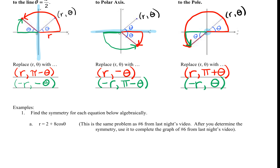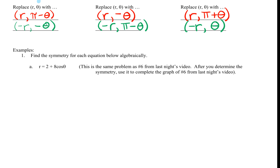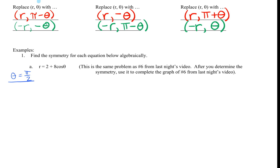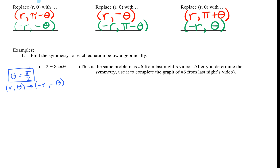The first example we're going to look at is number one: the equation r equals 2 plus 8 cosine theta — the exact same equation from your first graph. Let's first test theta equals pi over 2. I'm going to pick the easiest test first: the substitution where r comma theta becomes negative r comma negative theta. If this test works, it has the symmetry. If it does not work, I need to check the second test. If either one works, it has the symmetry — both do not have to work.